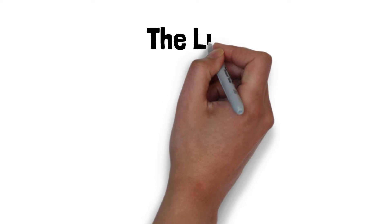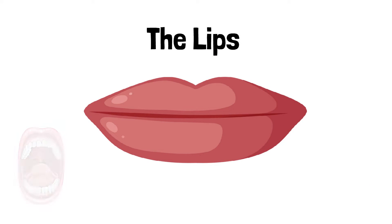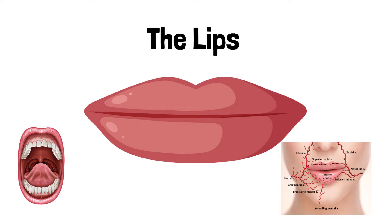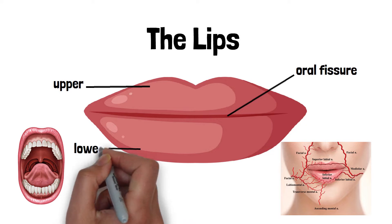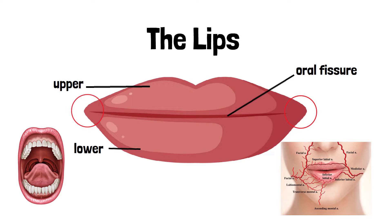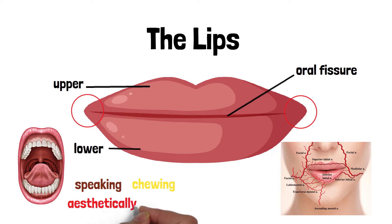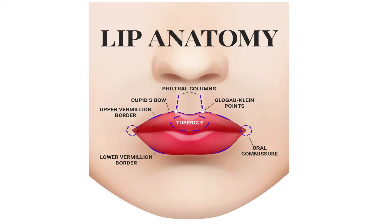Hello and welcome back everyone. The lips form the external boundary of the oral cavity. The lips are paired rich vascular structures located outside the mouth and are bound by oral fissures. The two lips, the upper and the lower, meet laterally at the angles of the mouth and function to help us in speaking, chewing and looking aesthetically pleasing. Today we will be going through the anatomy of the lips.